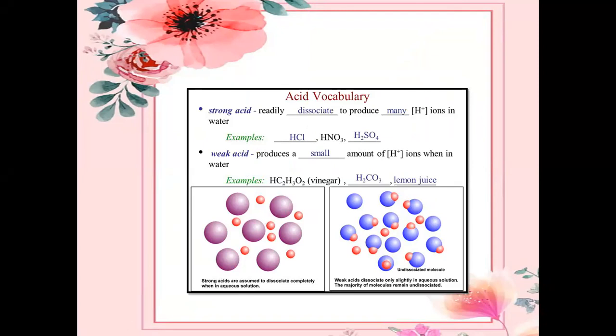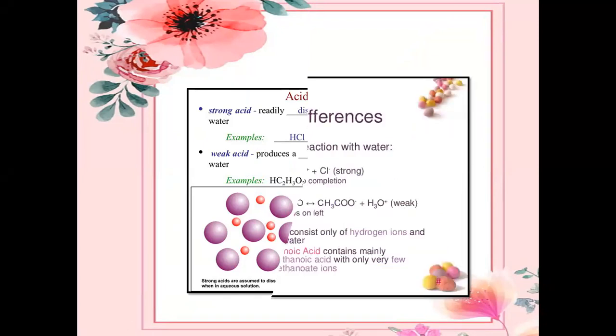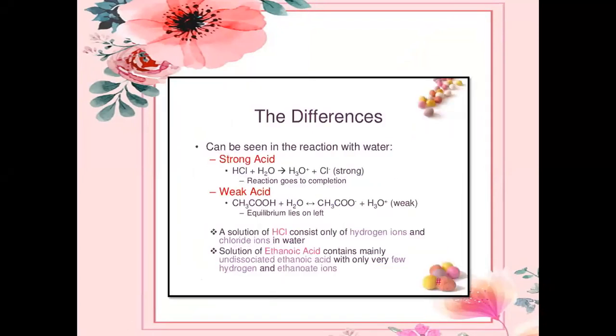A strong acid readily dissociates to produce many hydrogen ions in water, and a weak acid produces a small amount of hydrogen ions when in water. The differences between strong acid and weak acid can be seen in the reaction with water — the reaction goes to completion and equilibrium lies on the left.